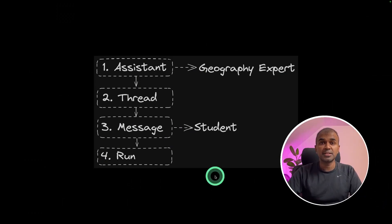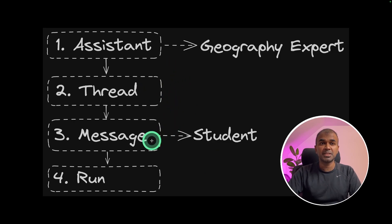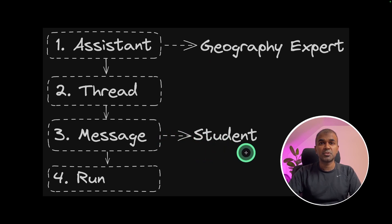Coming to creating your assistants, these are the steps. First, you are creating an assistant. Then you are creating a thread. Thirdly, you are creating a message. And fourth, you are running that. The assistant we create is a geography expert. The thread is for initializing the chat, and the message is the user — the student — who is asking a question to the geography expert.